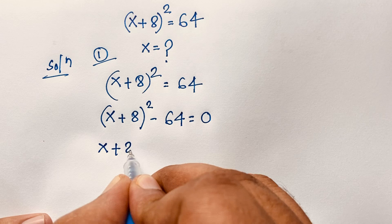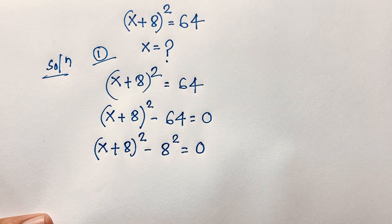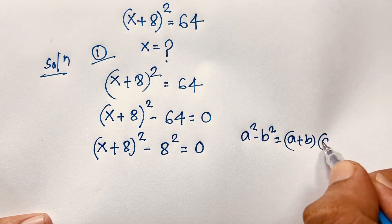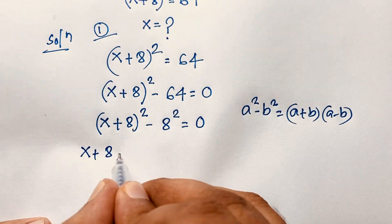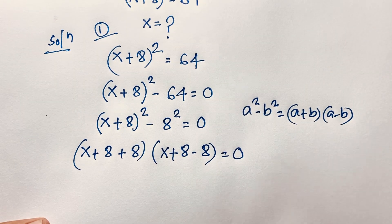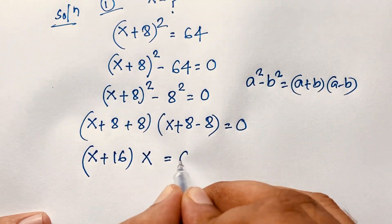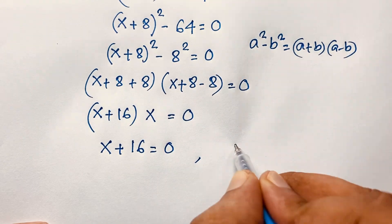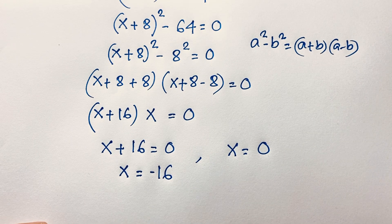We have (x + 8)² − 8² = 0. Using the identity a² − b² = (a + b)(a − b), where a = (x + 8) and b = 8, this becomes (x + 8 + 8)(x + 8 − 8) = 0, which simplifies to (x + 16)(x) = 0. So there are two cases: x + 16 = 0, giving x = −16, and x = 0.